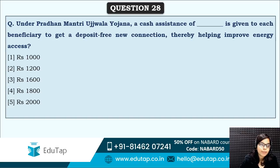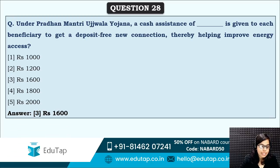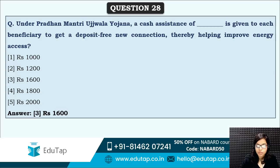Next: under Pradhan Mantri Ujjwala Yojana, a cash assistance is given to each beneficiary. What is the amount? You need to remember these dimensions of schemes. A cash assistance of rupees 1,600 is given to people to get a deposit-free new connection under the Pradhan Mantri Ujjwala Yojana.